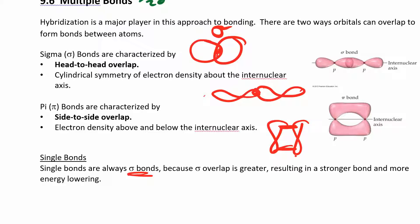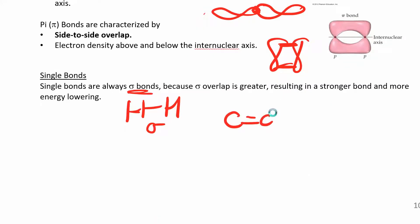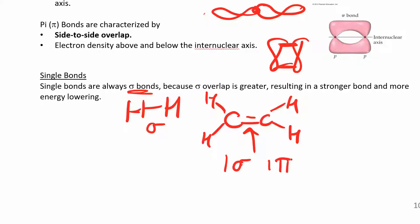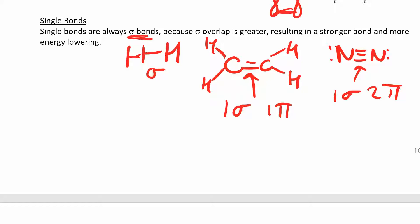A single bond like H-H is an overlap of two s orbitals — it's a sigma bond. A double bond, like in ethylene, is one sigma overlap and one pi overlap. A triple bond, like in nitrogen, has one sigma bond and two pi bonds. Let's look at what these really look like.